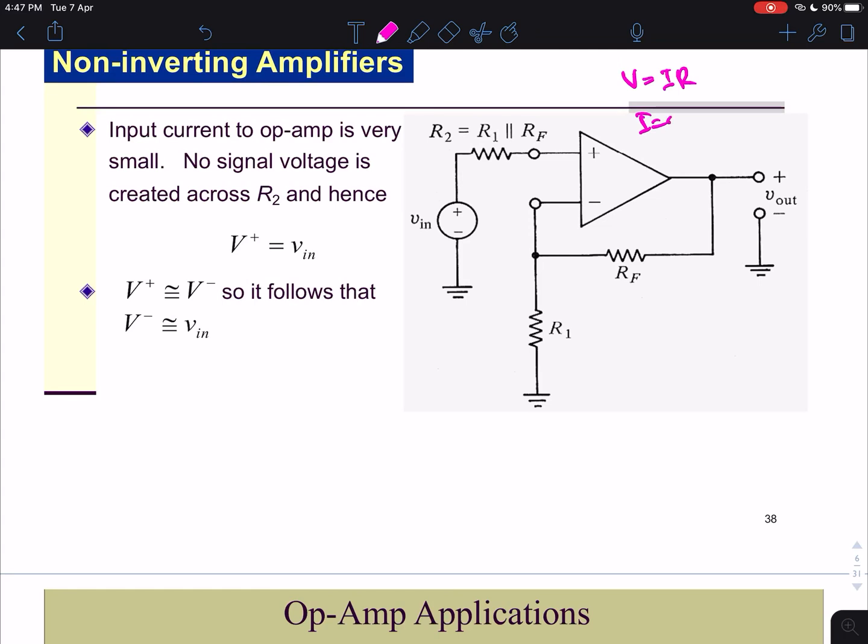When I is equal to zero there is no voltage drop across the resistor R2 and hence the V plus here equals to Vin.